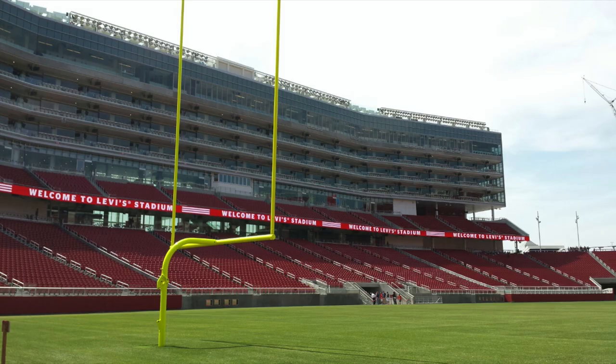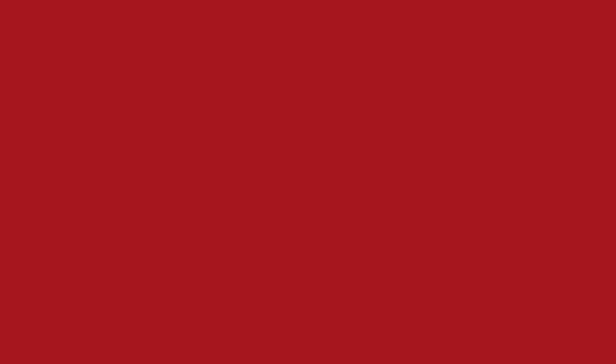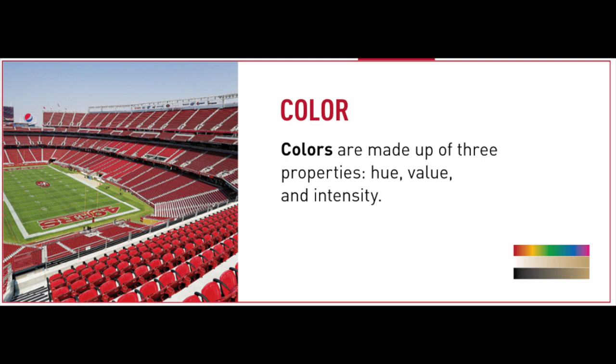As you can see here in this image, the field goalpost is made up of cylindrical forms. Art Term 5: Color. Colors are made up of three properties — hue, value, and intensity. The main colors of the 49ers are 49ers red and metallic gold.